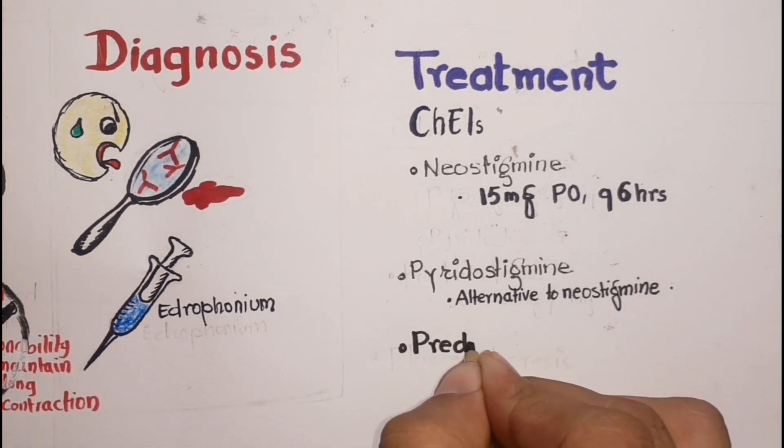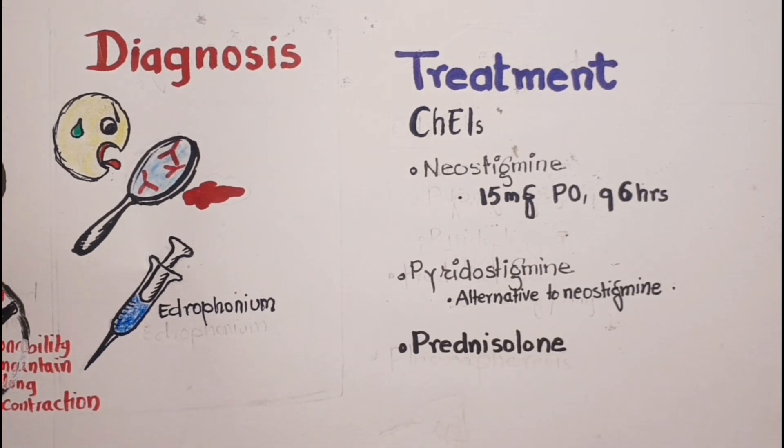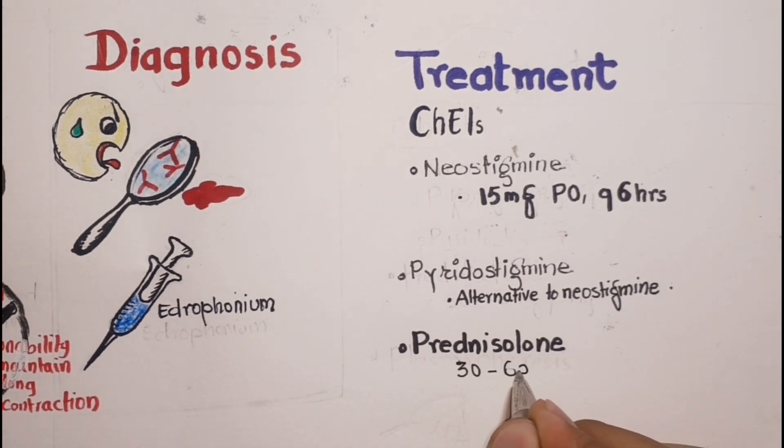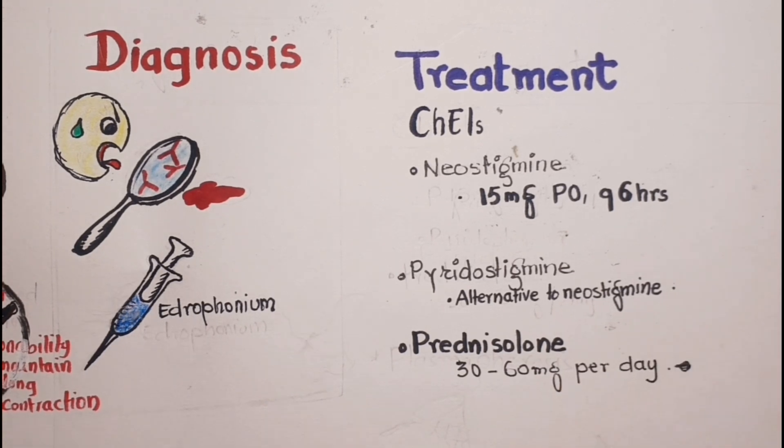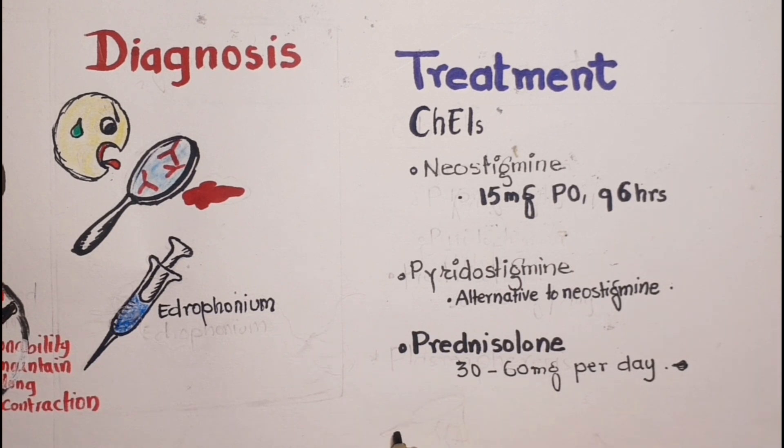Steroids, specifically prednisolone, also can be used 30 to 60 mg per day which have immunosuppressive action and may block the release of autoimmune antibodies against the nicotinic receptors.